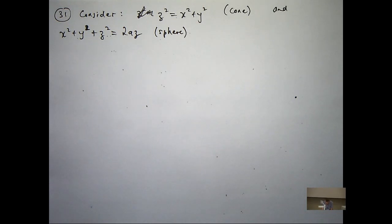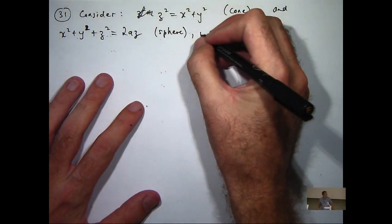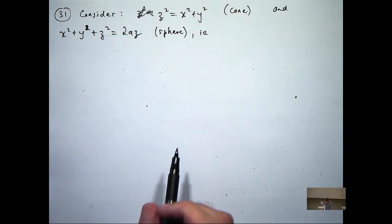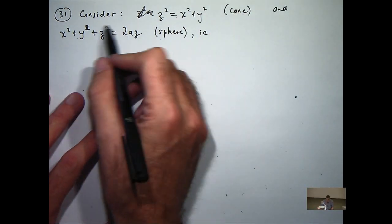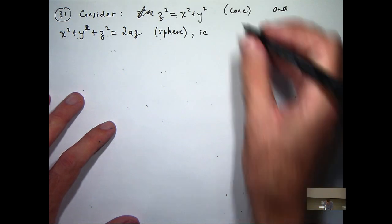Well, I just completed the square in z. Basically, I want to have something squared plus something squared plus something squared equals a constant. So all I've done is I've completed the square in z, so I get the following.